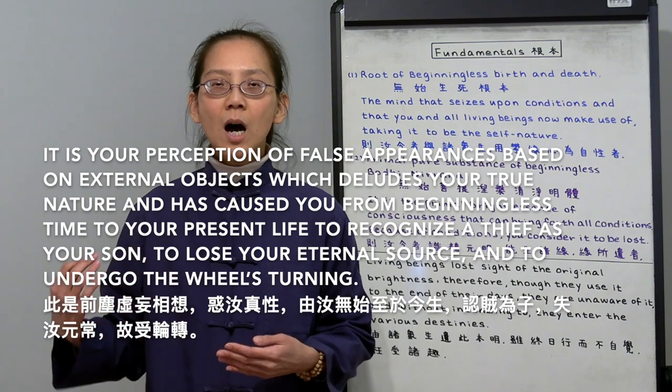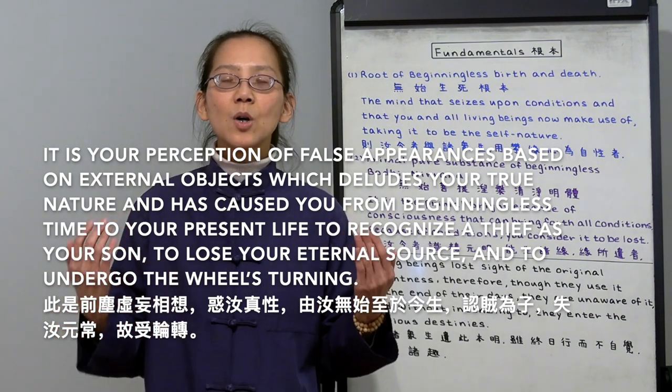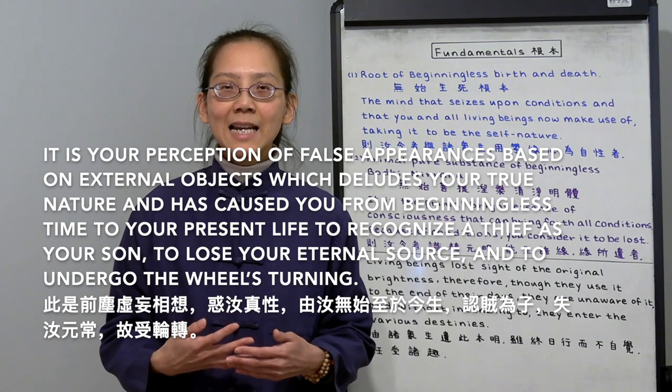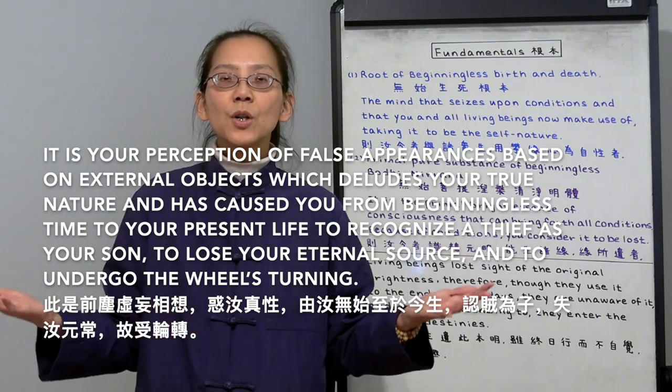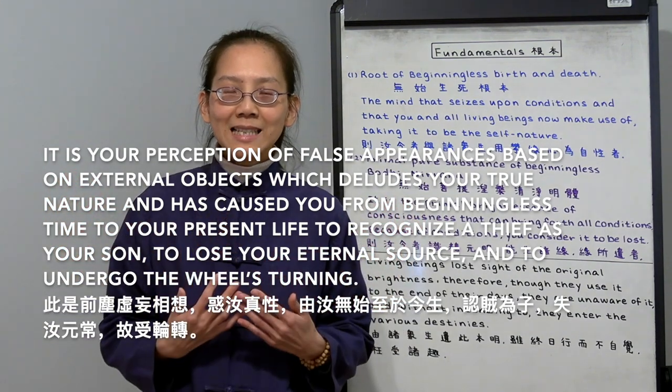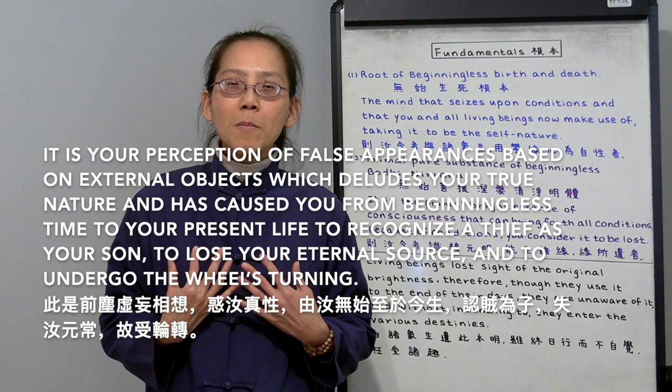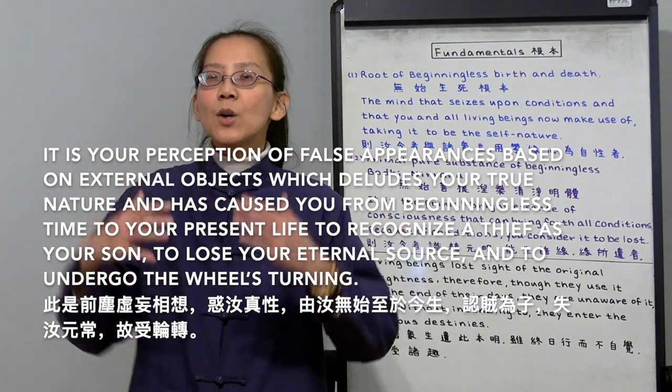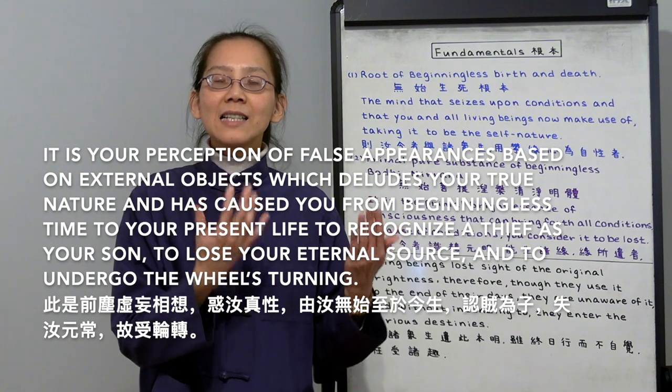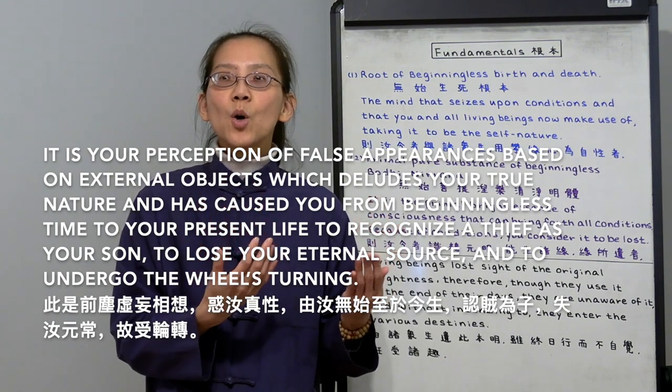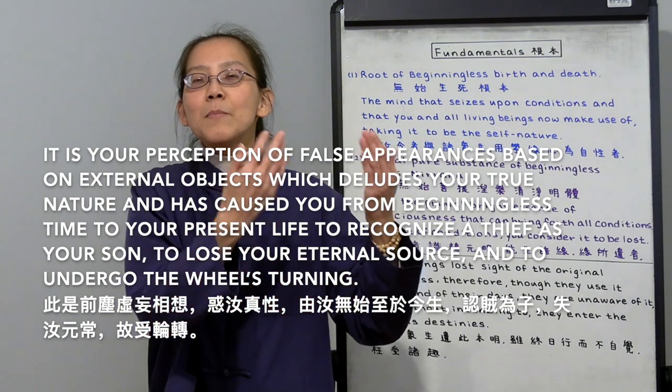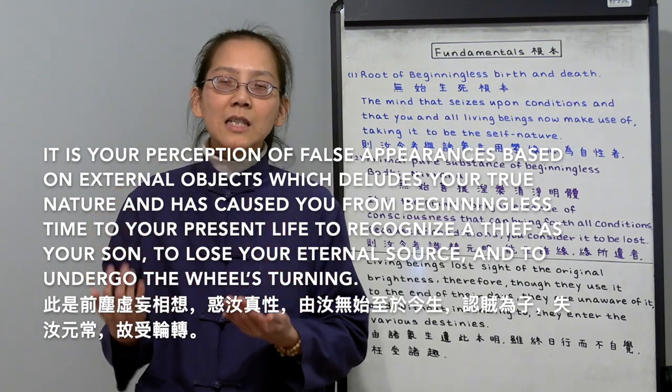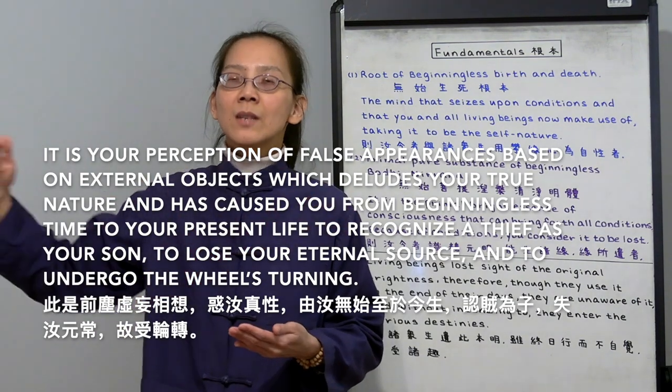This deluded mind is called the perception of false appearances based on external objects. First, we have the external objects. We call it the five dusts: form, sound, odor, taste and touch. Because of the external conditions, we create a false appearance, a shadow image in our own mind. We keep thinking about it. It becomes our perception. It creates our story. It creates our light. That's our light of consciousness. That is not us, but we think that's us. So we recognize the thief as our son. The deluded mind is a thief that's been stealing from us. But we see it as our true nature, as our dear son. That's why we are going through the wheels turning, the samsara.